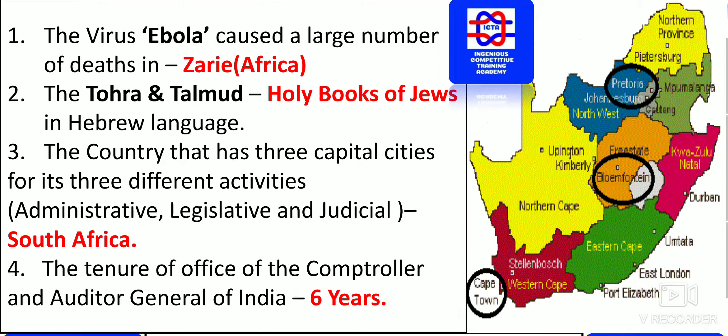The Ebola virus caused a large number of deaths in Zaire. Zaire is a place in Africa where the maximum deaths due to the Ebola virus took place.